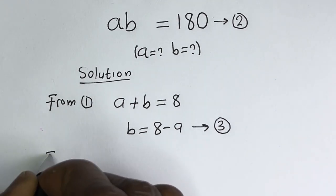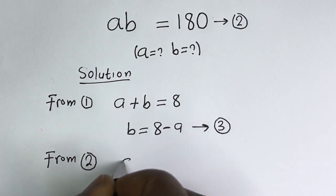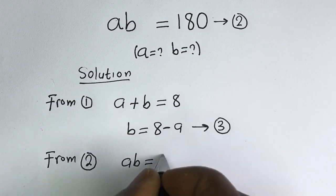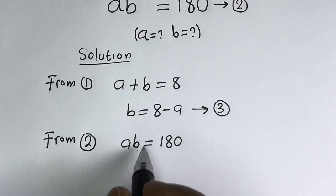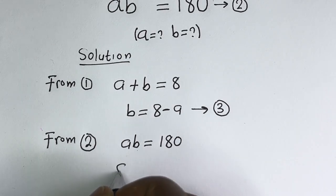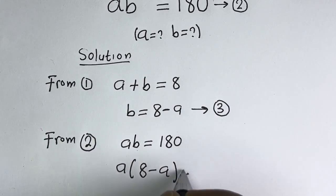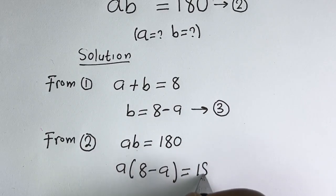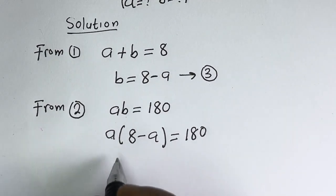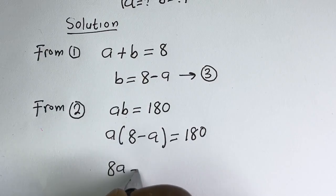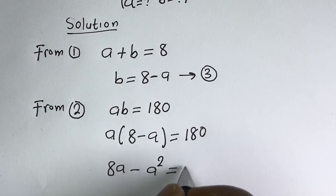Also from equation 2, AB is equal to 180. We can now substitute for B here: that is A times (8 minus A) is equal to 180. Let's open the bracket: A multiplied by 8 gives 8A, minus A multiplied by A gives A squared, so 8A minus A squared is equal to 180.